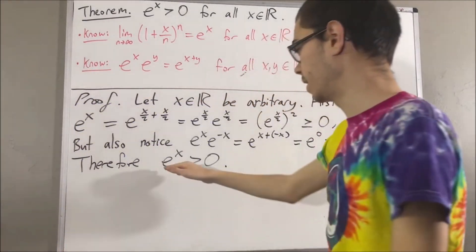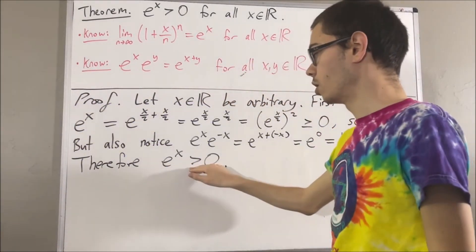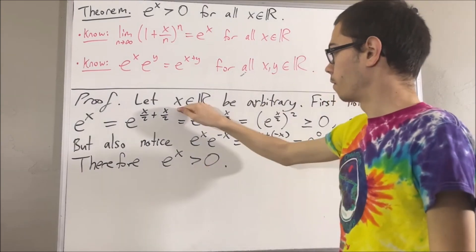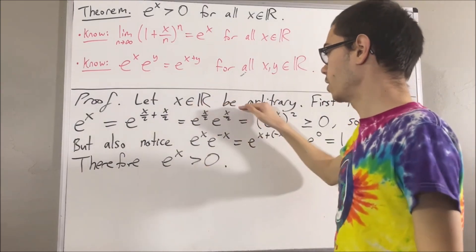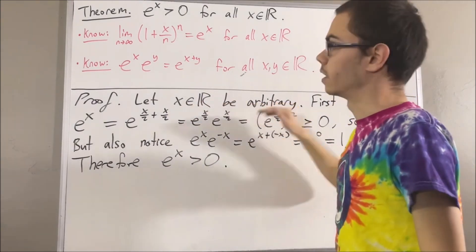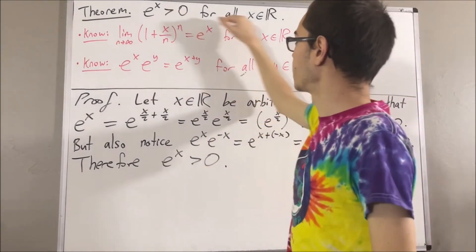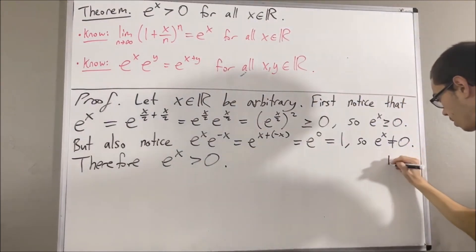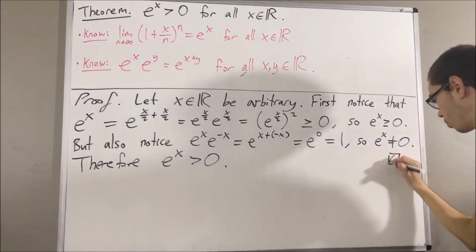And so we have shown that e to the x is greater than 0 for any real number x. That is exactly what we wanted to prove, so this completes the proof.